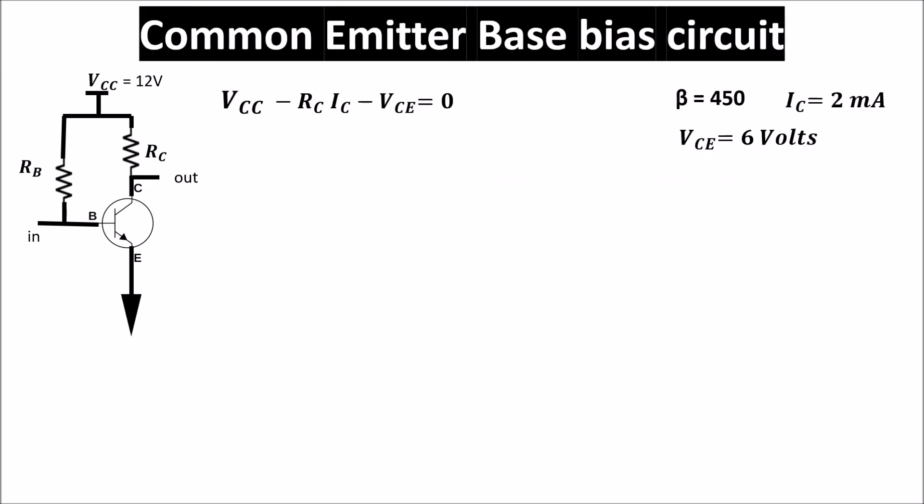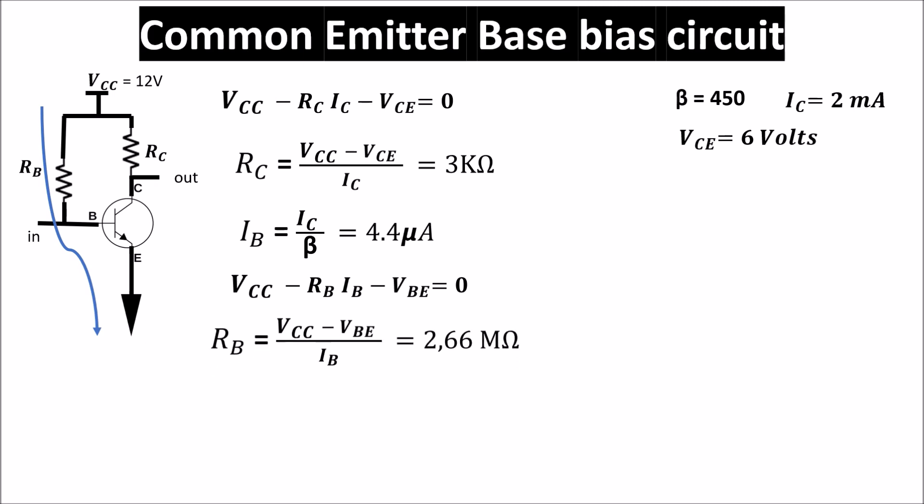Now we know IC, VCE, and beta and we want to find our resistors. RC is 3 kilo ohms because in RC flows 2 milliamps and drops 6 volts, and IB is IC divided by beta so IB is 4.4 microamps. For RB we write the Kirchhoff voltage law around the base. Knowing that VBE is 0.7 volts, we get an RB of 2.66 mega ohms. So this is the biasing of this circuit.